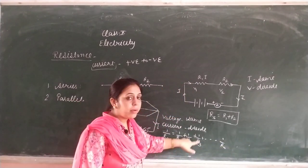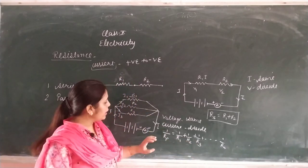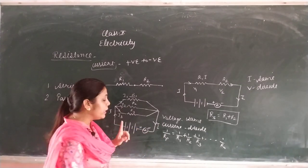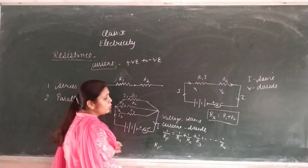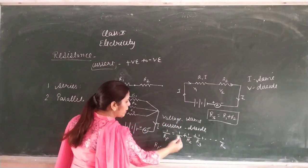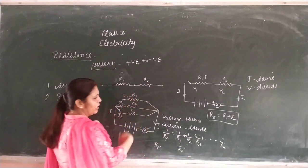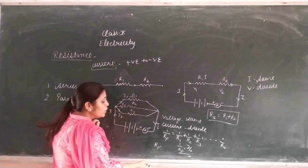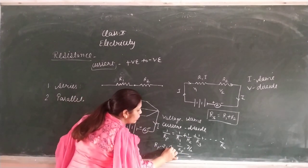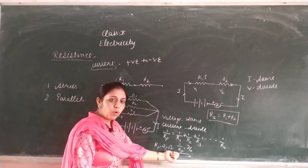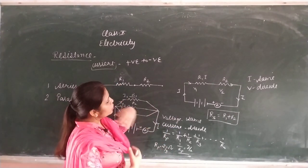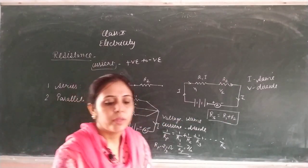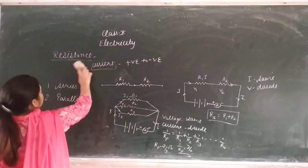Remember, when doing numericals: for parallel combination the formula gives you the value of 1 upon RP. But what you need to find is RP — resistance in parallel combination. So whatever answer comes, reverse it. Suppose 1 upon RP comes out to be 3 by 2, then RP equals 2 by 3. The unit of resistance is ohm. Using these two formulas, we will now do numericals on series and parallel combination. In series: RS equals R1 plus R2. In parallel: 1 upon RP equals 1 by R1 plus 1 by R2 plus 1 by R3.